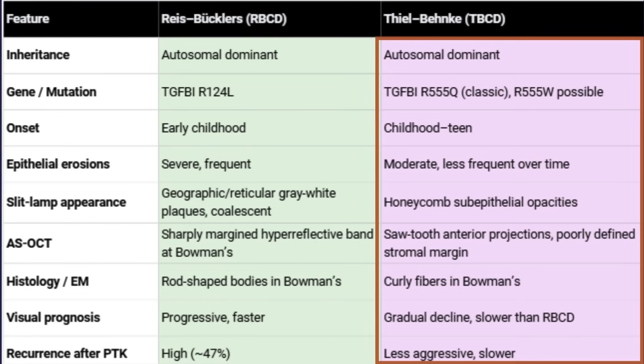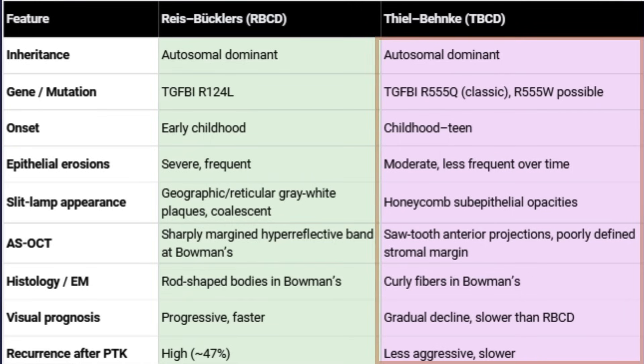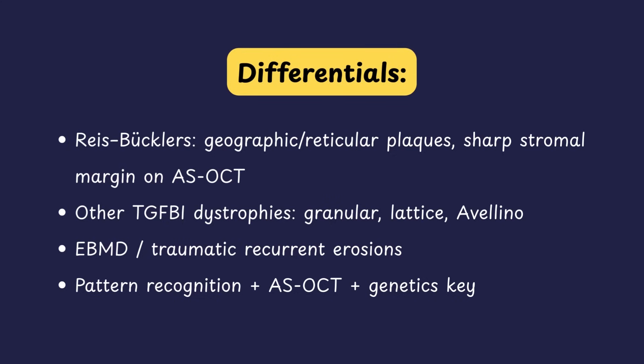Both RBCD and TBCD are autosomal dominant Bowman's layer dystrophies caused by mutations in the TGF-β1 gene, but the mutations differ: RBCD has R124L and TBCD has R555Q. Another key difference is disease course — visual decline is faster and more severe in RBCD, while TBCD progresses more slowly. Other differentials include TGF-β1-related stromal dystrophies with deeper lesions, EBMD, and traumatic erosions where trauma history and absence of family history help distinguish. This concludes the lecture on Bowman's layer dystrophies.